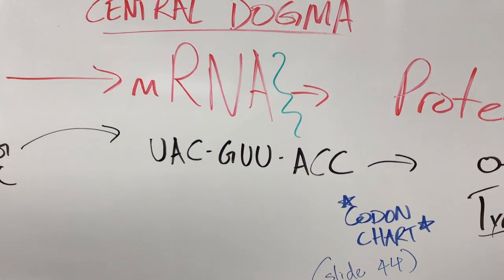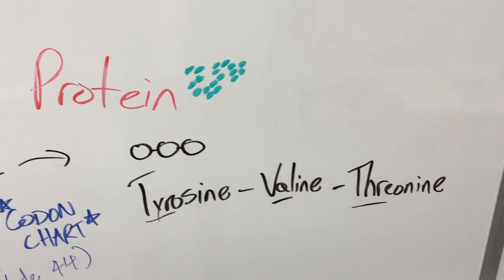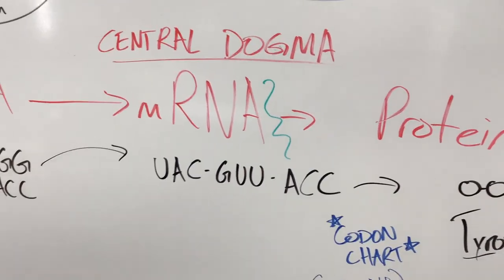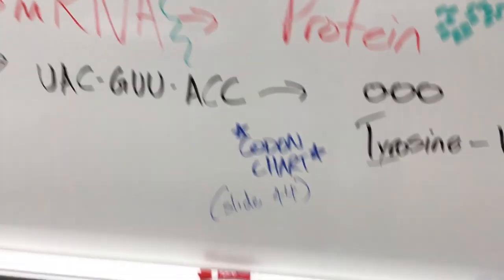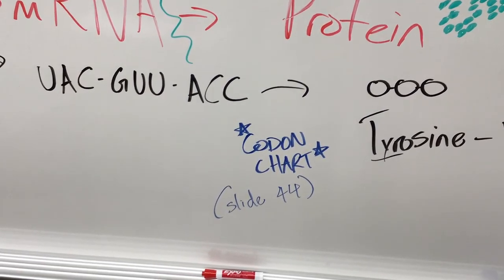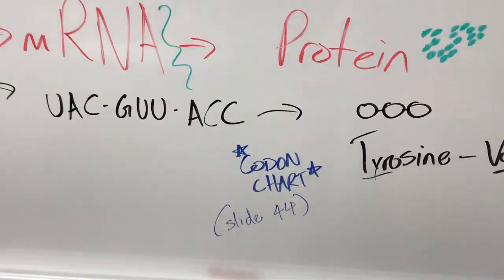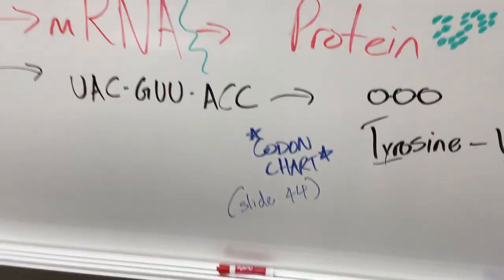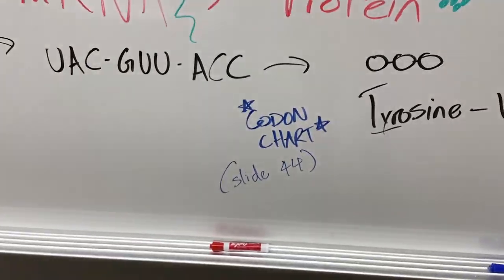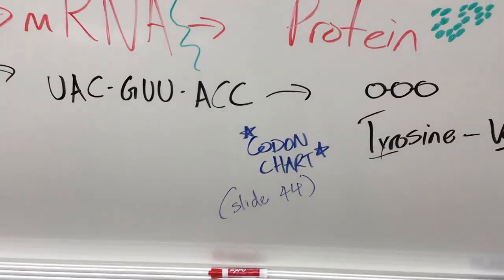And to know what amino acids are going to get put together, what protein shape, what protein we're going to put together from that code, we read the codon chart. Guys, to get some last-minute practice on this, please check the instructions on slide 44 in the notes. The notes are in the agenda, under materials.